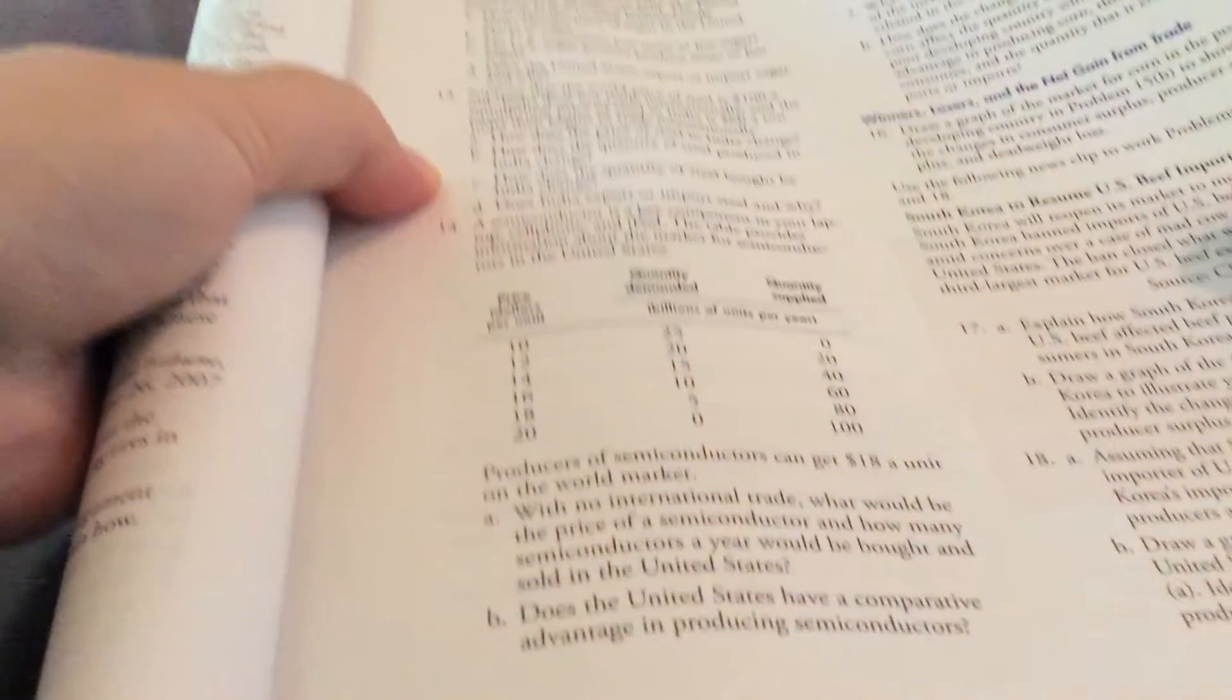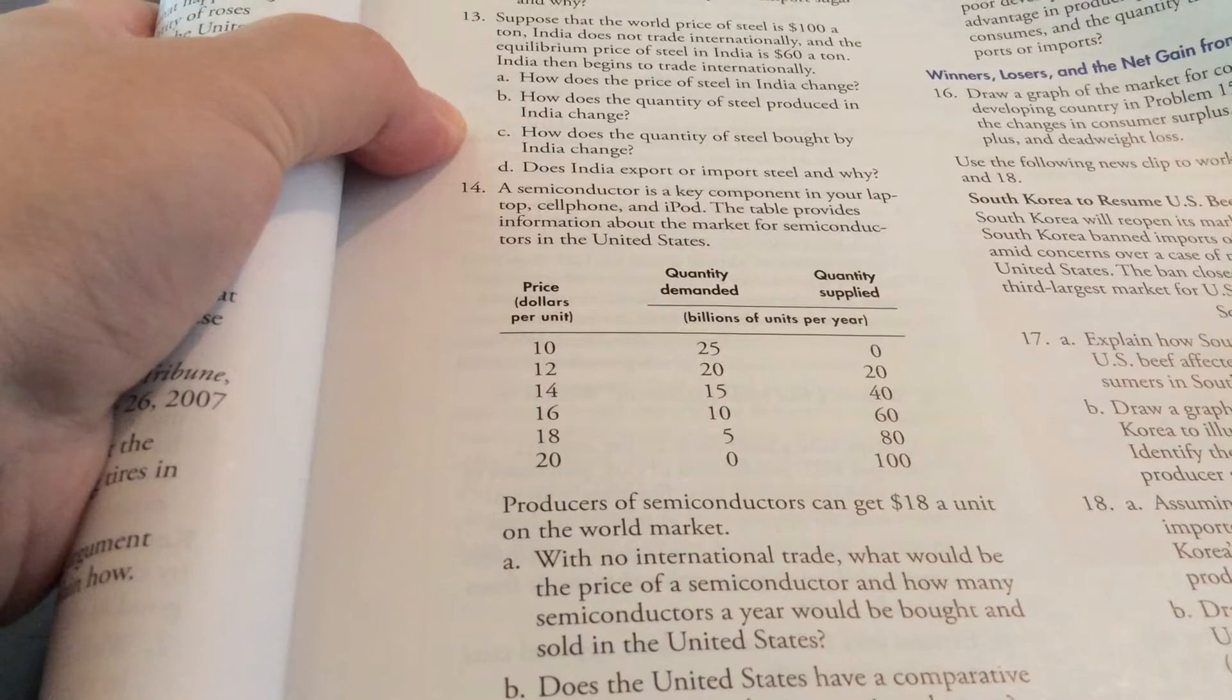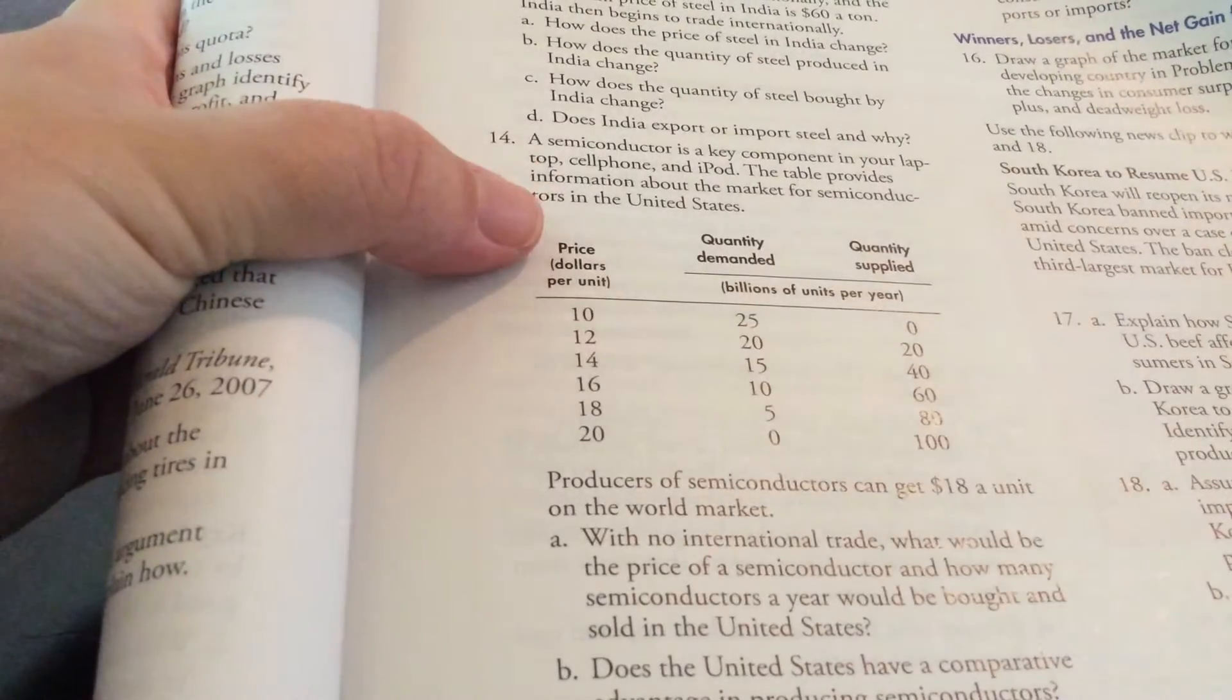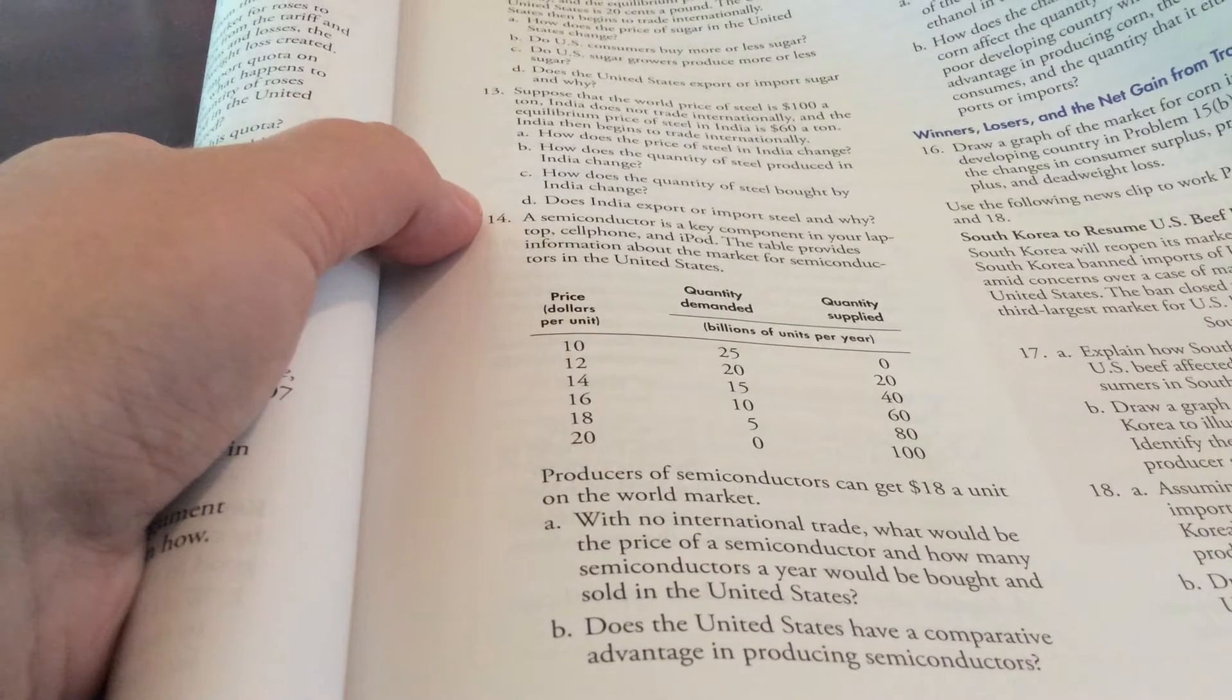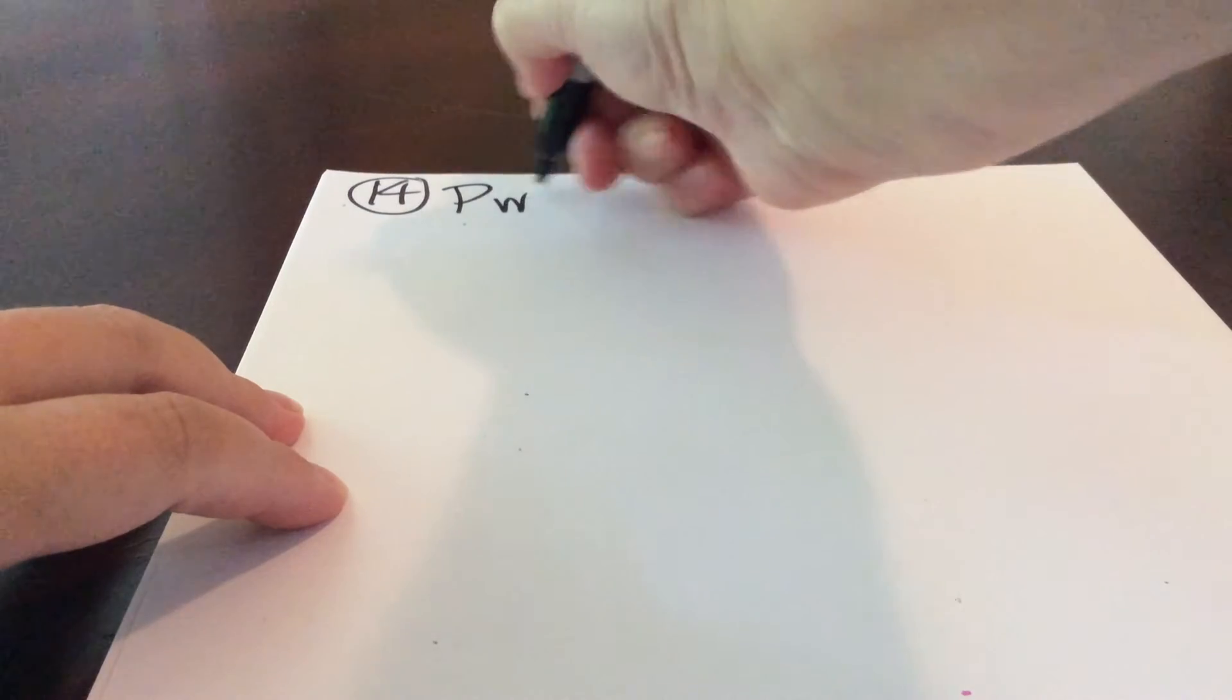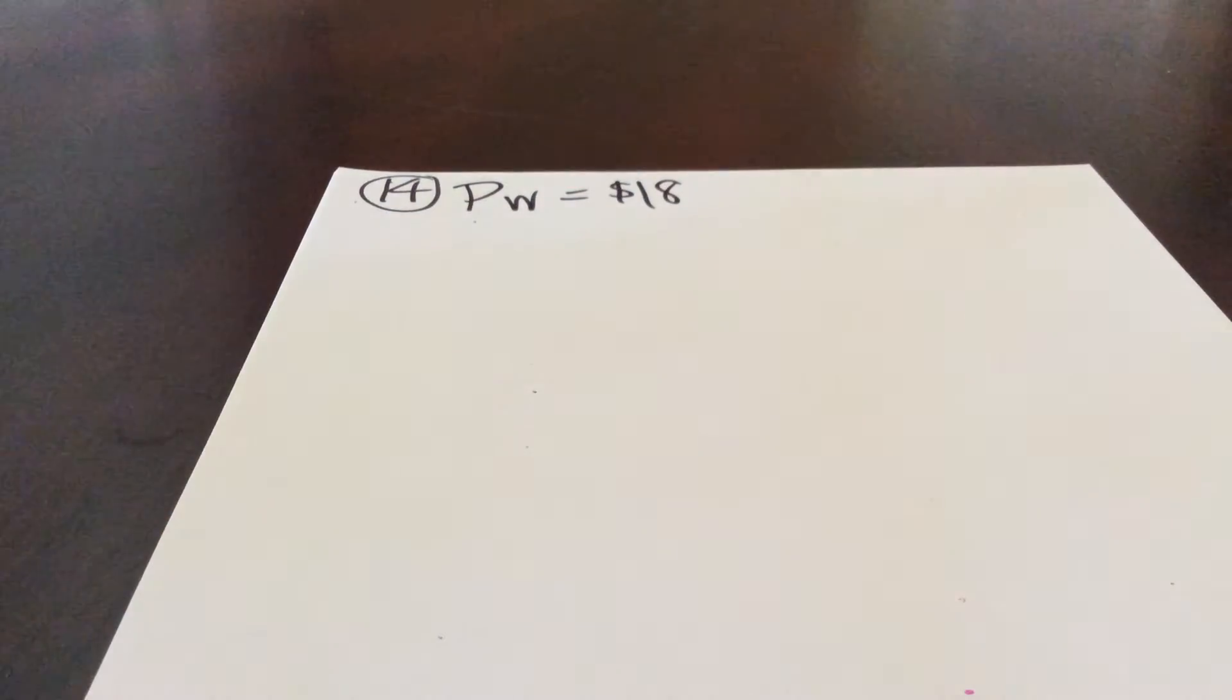Briefly here, one more question from this chapter. This is going to be question number 14. And here we're looking at the market for semiconductors. It's a key component in laptops, cell phones, tablets, etc. And the book provides us, let me show you guys here, with this is the market for semiconductors in the United States. So first column is the price, second column is the quantity demanded in the U.S. market, and the last column is the quantity supplied. And we're told that producers of semiconductors can get $18 per unit on the world market. So the price in the world is currently $18 a unit.